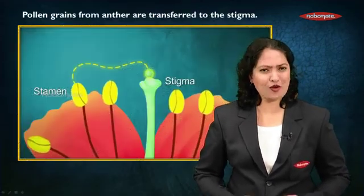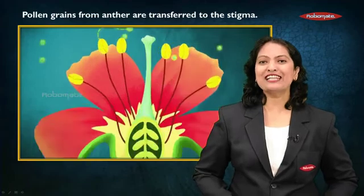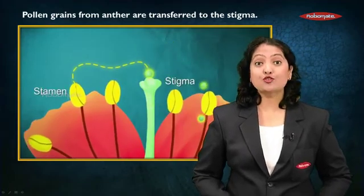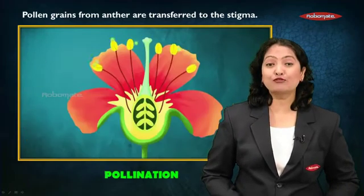Welcome students to the next interesting module of this chapter. We all know that the stamens have the anthers on their top which produce the pollen grains, whereas the ovule or the female gamete is present right at the bottom of the carpel in the ovary. So how do pollen grains reach there? They reach there by the process of pollination. Pollination is the transfer of pollen grains from the anther to the stigma of the flower.